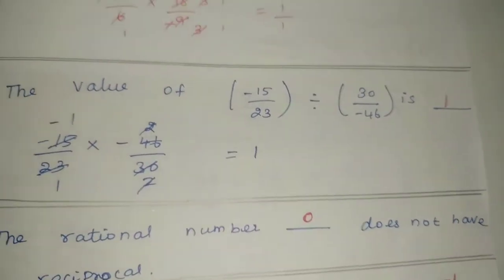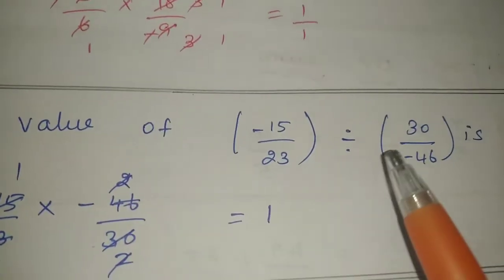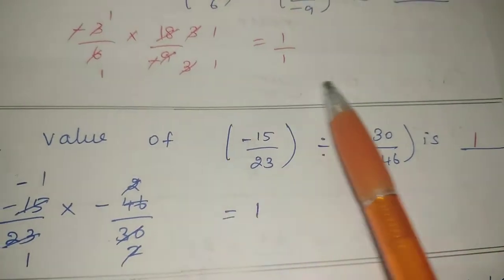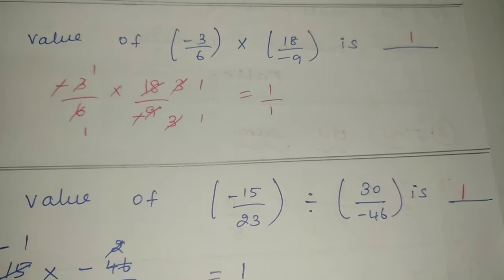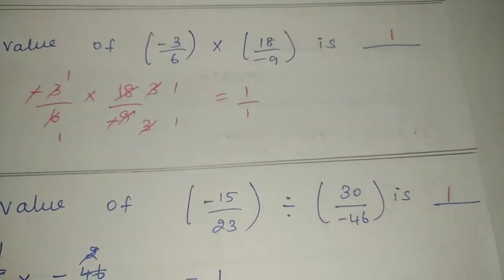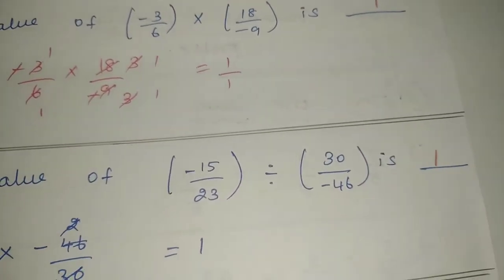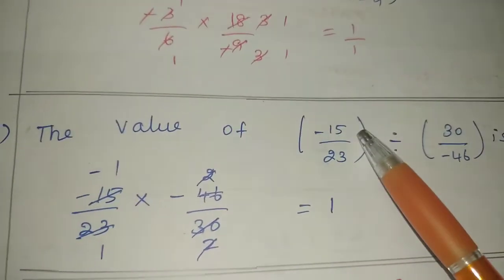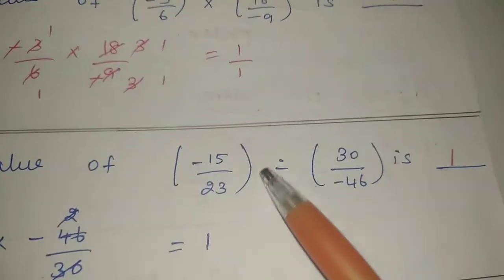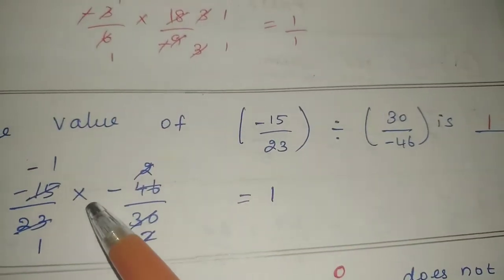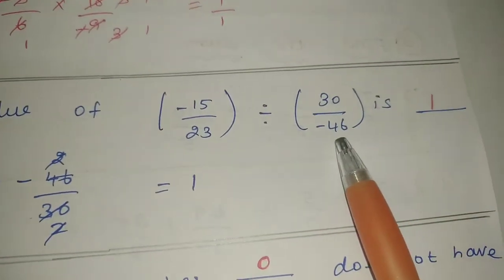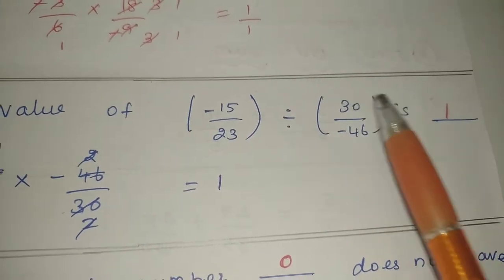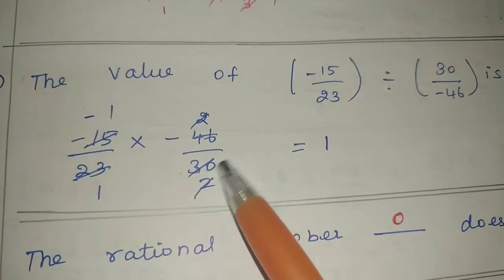Now, third sum: the value of minus 15 by 23 divided by 30 by minus 46 is dash. Now listen — multiplication, division, and LCM are available; additions are fraction and LCM is available. For division, we take minus 15 by 23 and multiply by the reciprocal of the right side value. This gives minus 46 by 30.